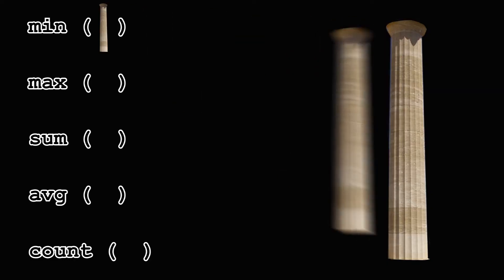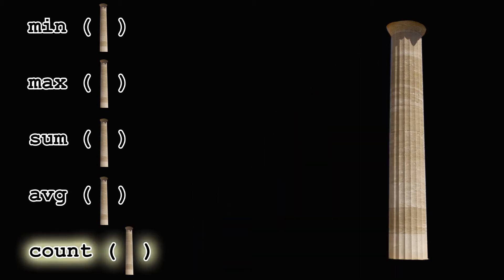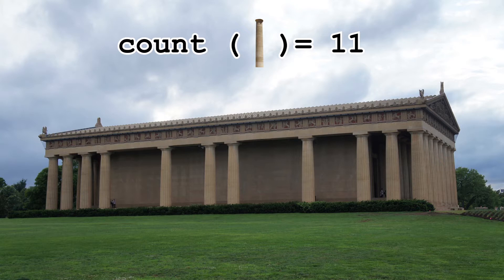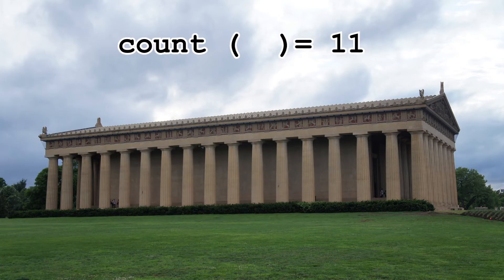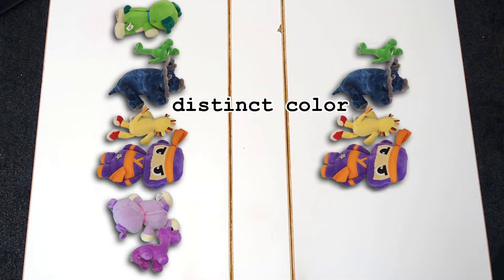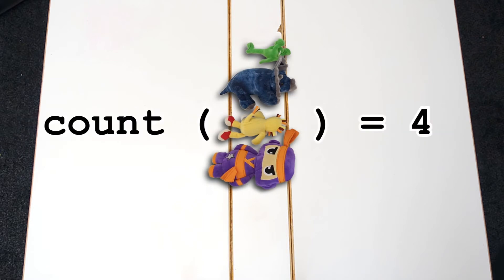Most aggregates accept a column as an argument but count is slightly special. You can pass a column to it which gives you the number of non null values in that column or to ensure you get the total number of rows use star. They also allow you to prefix the column with the keyword distinct. This first filters your data set to find the different values for the column. Once it's done this it then applies the function to one instance of these values.